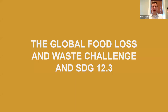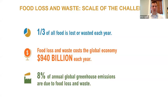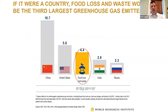To understand the scale of this issue: by best estimates, about one third of all food is lost or wasted each year somewhere from farm to fork — it could even be higher based on more recent estimates. That costs the global economy about 940 billion dollars each year, and about 8 percent of annual greenhouse gas emissions can be associated with food loss and waste. To put that in perspective, if it were a country, it would be the world's third largest greenhouse gas emitter after China and the US.